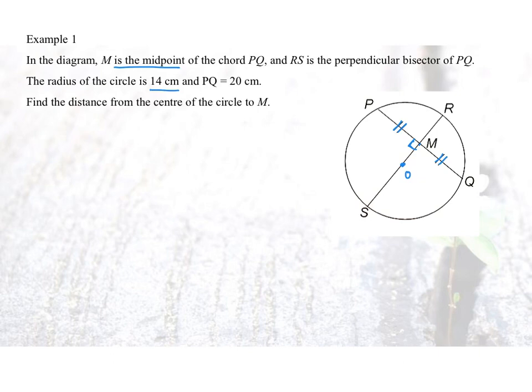Can we draw the radius of the circle into this diagram? Where will be the radius of a circle? For example, we can have OP or OQ. We will have a right-angled triangle over here.